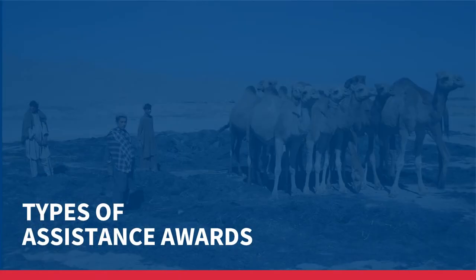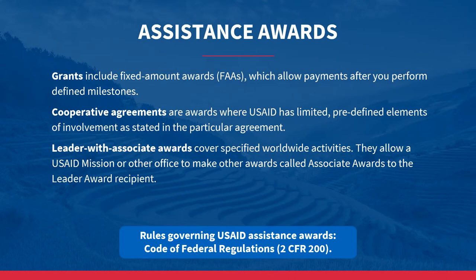Now that we have reviewed contract types for acquisition awards, we will examine in detail the different types of assistance awards. USAID uses three general types of assistance awards: first, grants such as fixed amount awards; next, cooperative agreements where USAID has limited predefined elements of involvement; and finally, leader with associate awards.